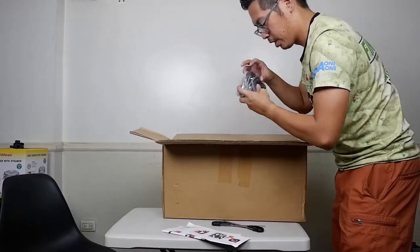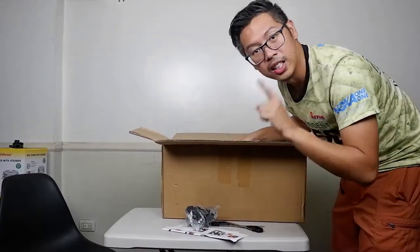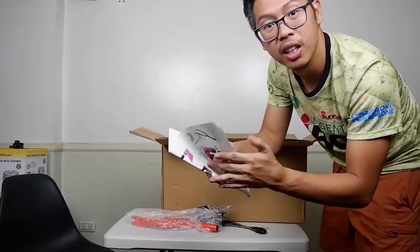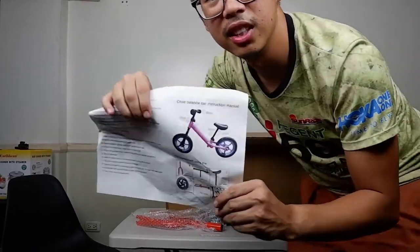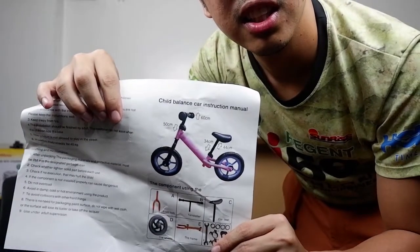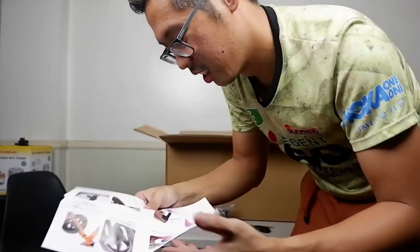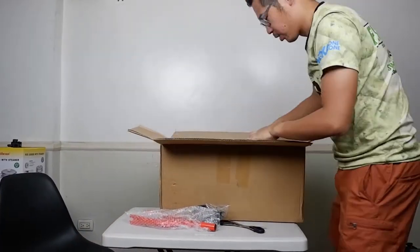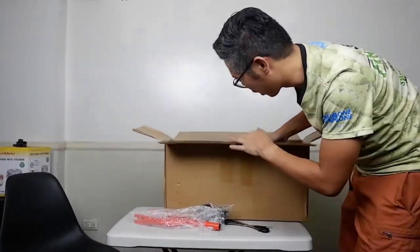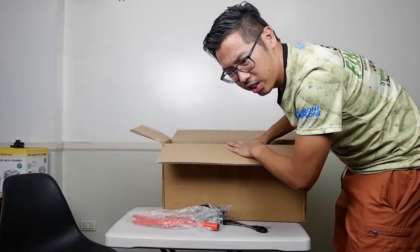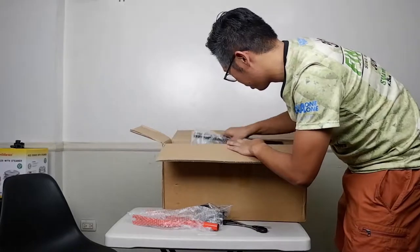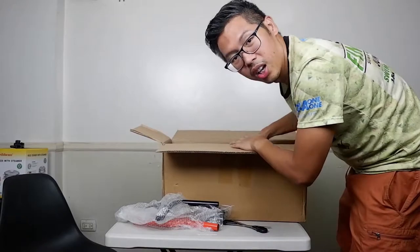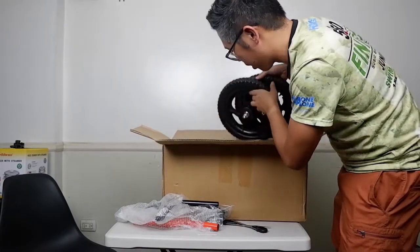Okay, inside it's a China generic Strider bike. So this is a lot cheaper than Strider. Strider I think cost around six thousand for the most basic one. This one I'm just going to sell it around 1,700 pesos.